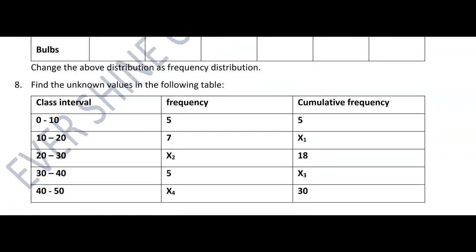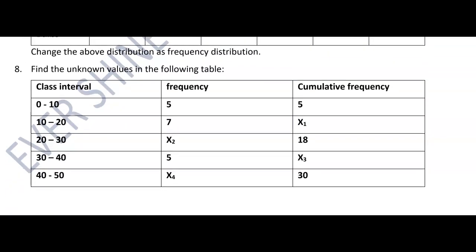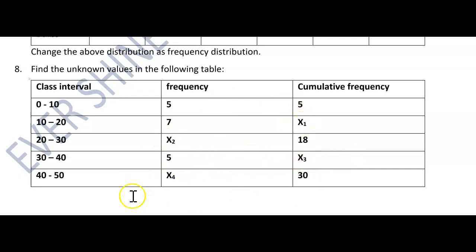Question 8: Find the unknown values of the following table. They have given class interval, frequency, and cumulative frequency. The unknowns are x1, x2, x3, x4 — sometimes given as a, b, c, d. You need to find the values of these unknowns.